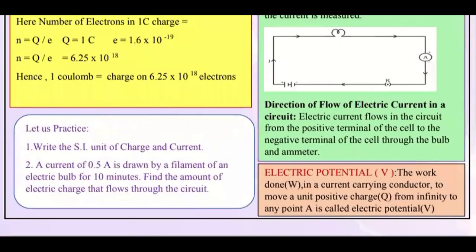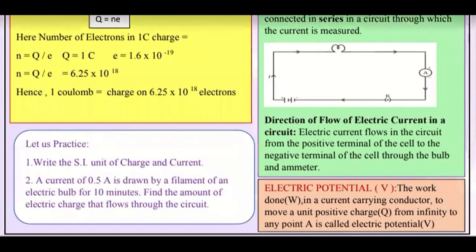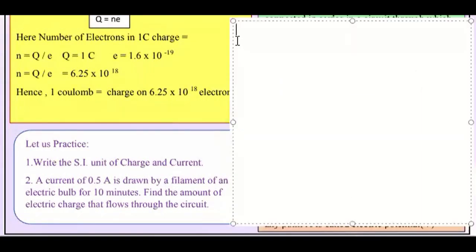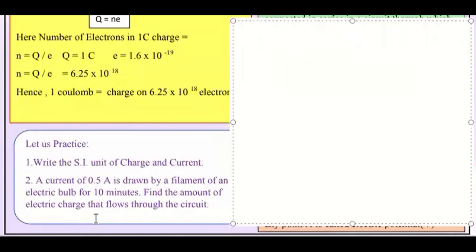Question two is a numerical. A current of 0.5 ampere is drawn by a filament of an electric bulb for 10 minutes. Find the amount of electric charge that flows through the circuit. So there is a bulb filament with 0.5 ampere current flowing for 10 minutes, and you have to find how much electric charge flows through the circuit.